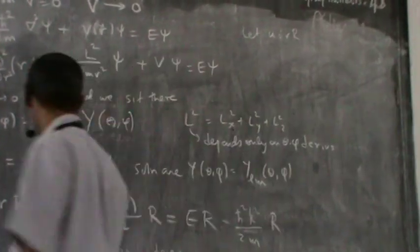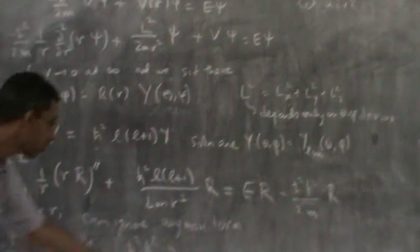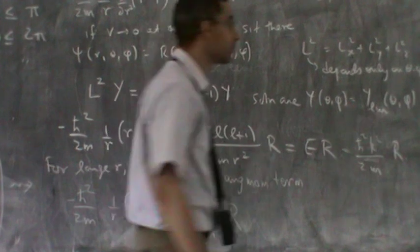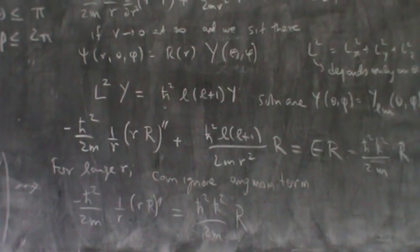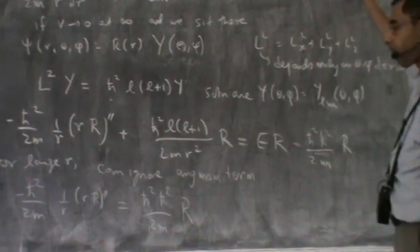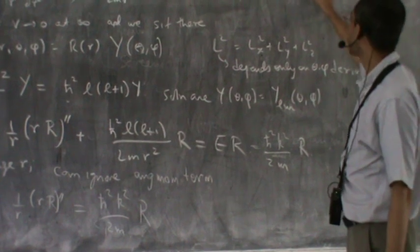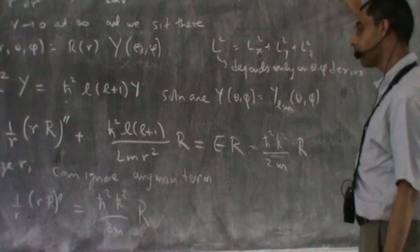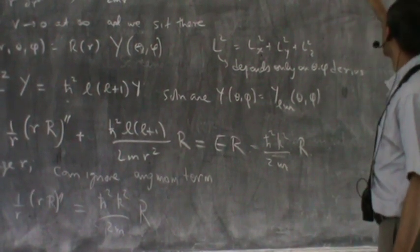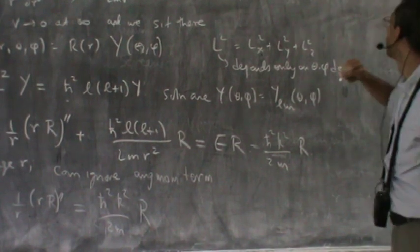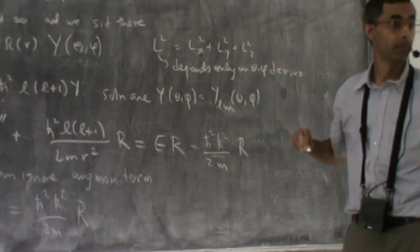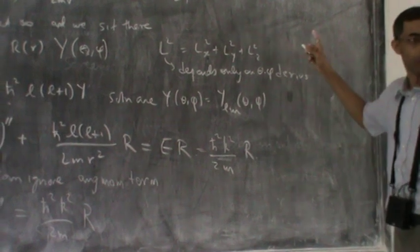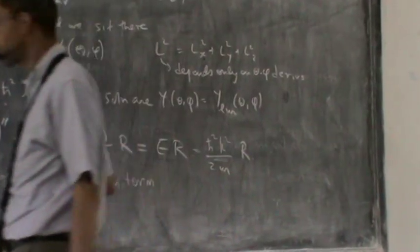You see why that is helpful? Because this becomes u double prime. This r goes there and becomes u. So the equation then simply becomes minus u double prime is equal to k squared u. Very simple upon making that substitution.